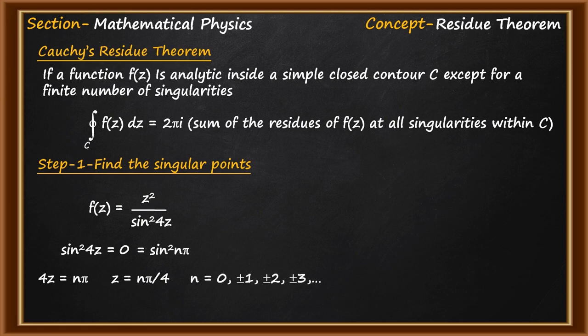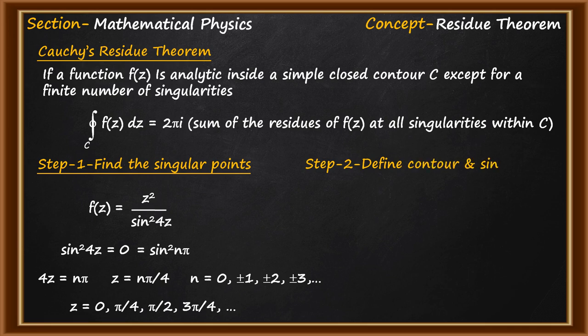The singular points for this function are z = 0, ±π/4, ±π/2, ±3π/4, and so on. Now we have all the singular points, but we don't need all of them — we only need those which are within the contour. So the next step is to define the contour and find which singular points are present within it.